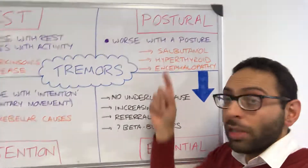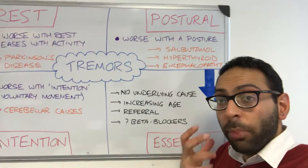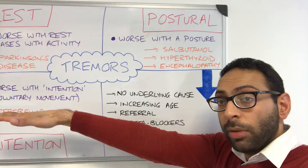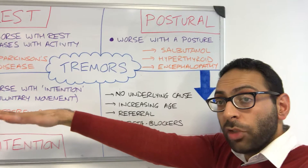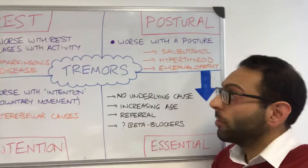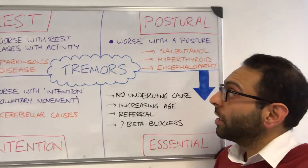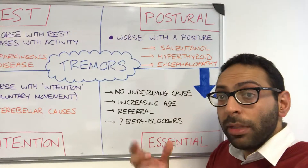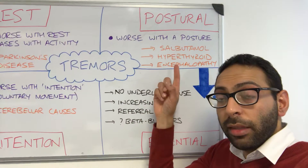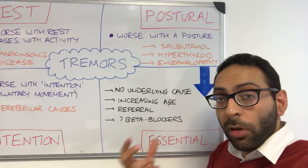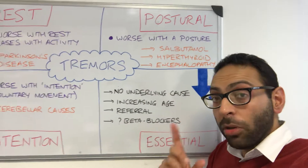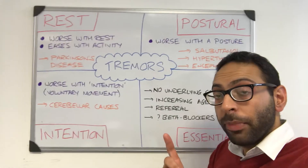Then you have postural tremors — these are worse with posture. So if you put your hand out, for example, you may get a very fine tremor. Things like medication such as salbutamol, hyperthyroidism, hepatic encephalopathy — there are lots of different reasons why you might get a postural tremor.